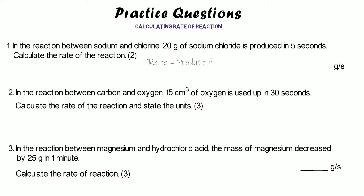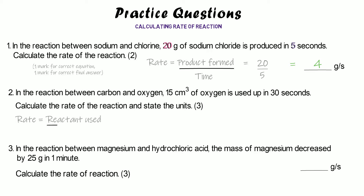For question one, we're told how much sodium chloride is produced, so we do product formed divided by time. Product formed is 20 grams and time is 5 seconds: 20 divided by 5 gives a rate of 4 grams per second. You get one mark for using the correct equation and one mark for the correct final answer.